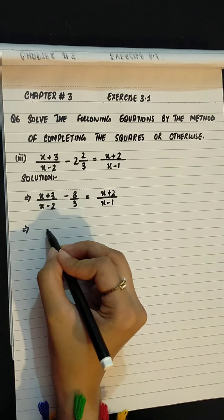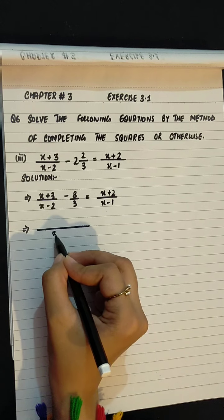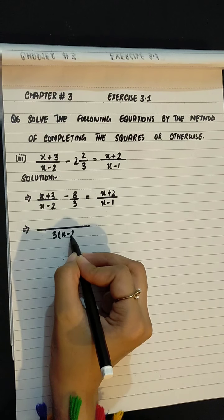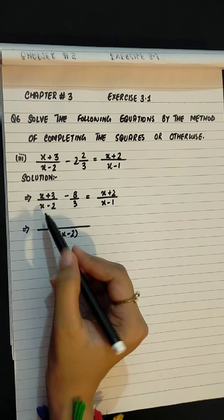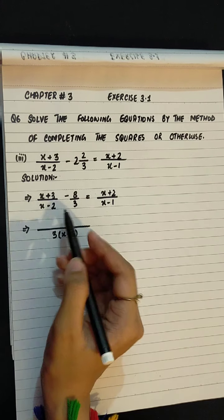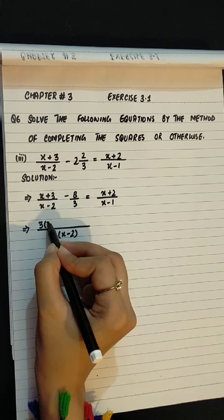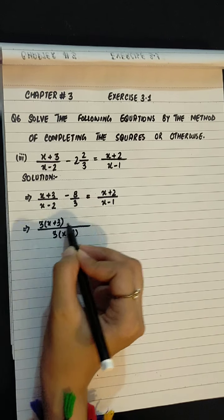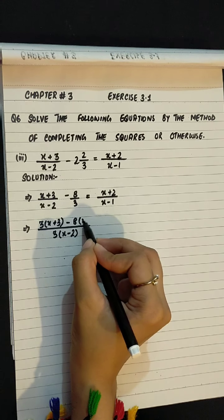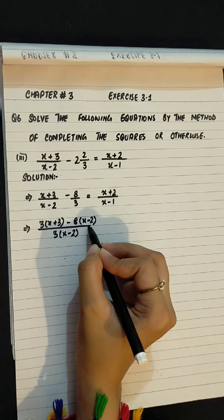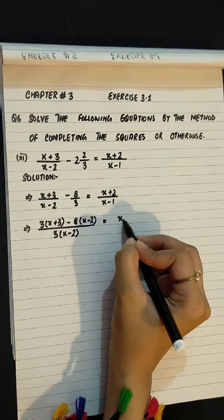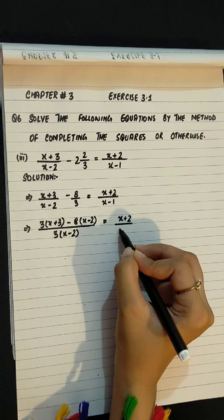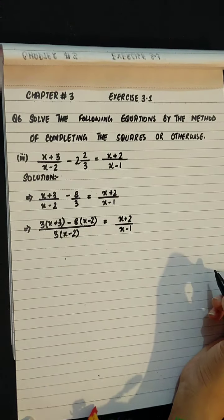When fractions are there, we take LCM. LCM will be 3 into x minus 2. We will solve this. Here we will be 3 into x plus 3 minus 8 into x minus 2 equals to x plus 2 divided by x minus 1.